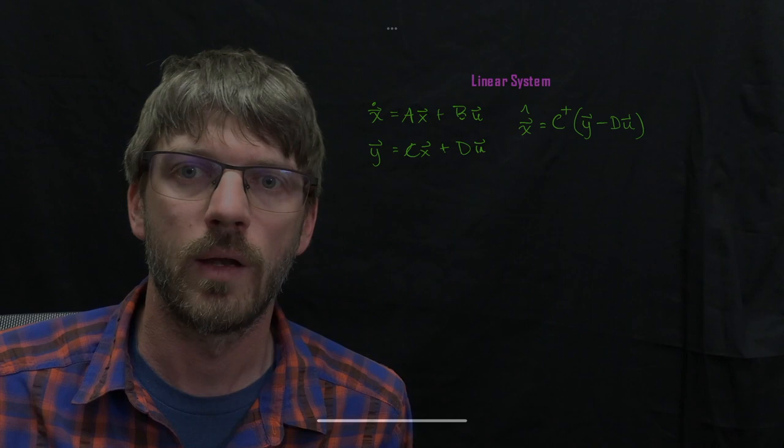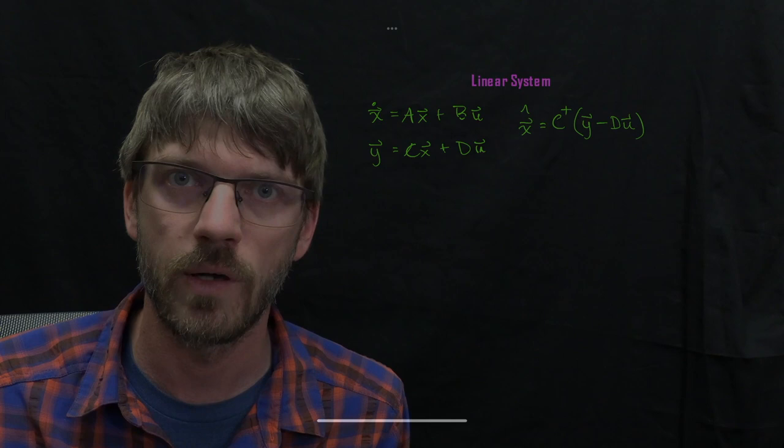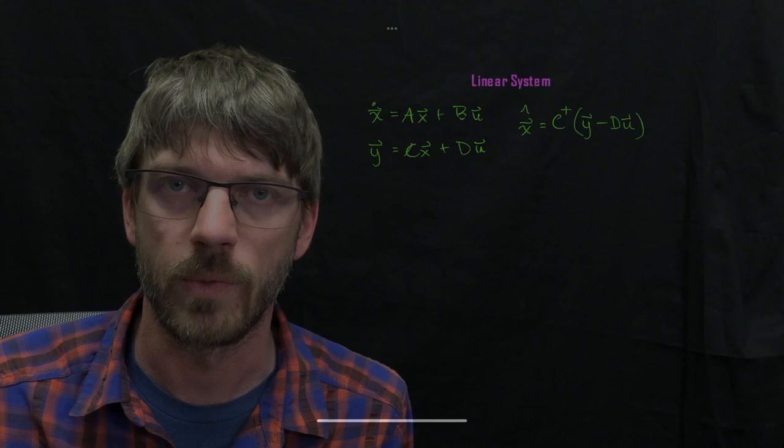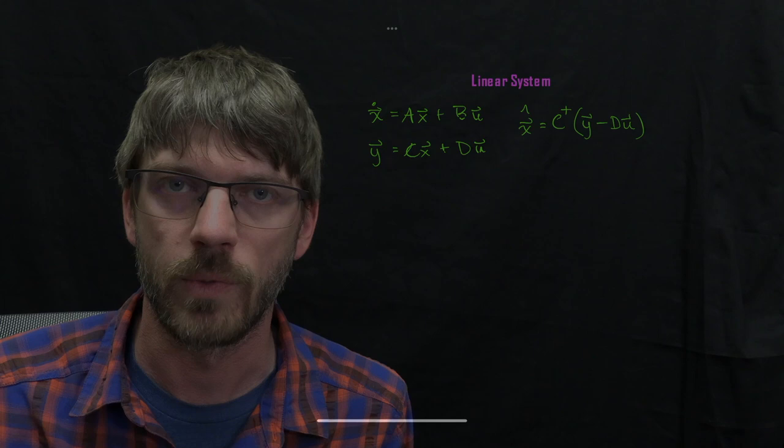Now recall that observability is asking whether or not it's possible to estimate state given measurements from some time window. So we have multiple measurements. So what we could do is we could take the derivative of those measurements and that will give us some additional information.